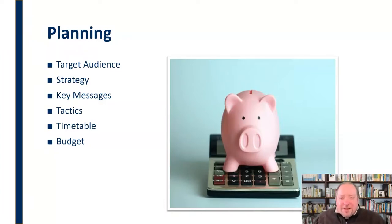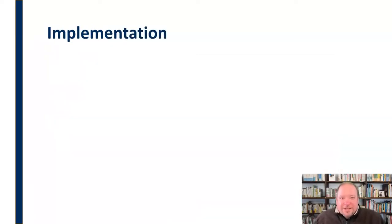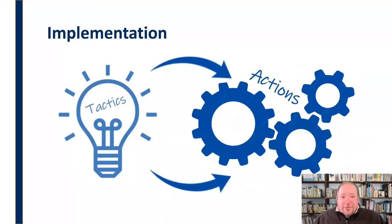All of planning is about funneling and narrowing things down to what's going to be the best use of our resources as we seek out that specific target audience with the specific key message. The planning stage and the implementation stage are critically interlinked. In the implementation stage, we take those tactics we developed — our timetable, our budget, our strategies, our key messages — and we start to put them into action. That's what implementation is: we've got the plan, now we go out and execute it.